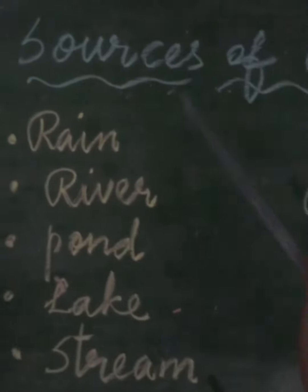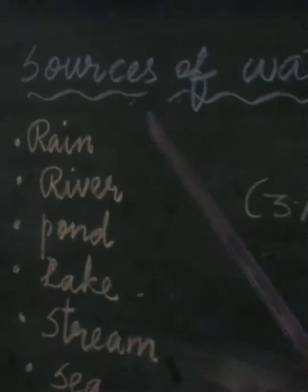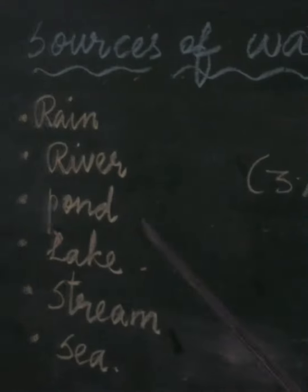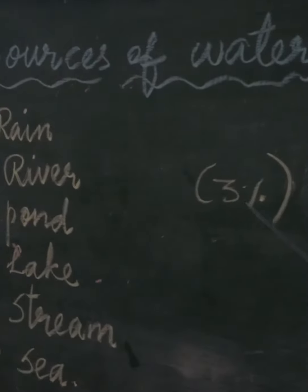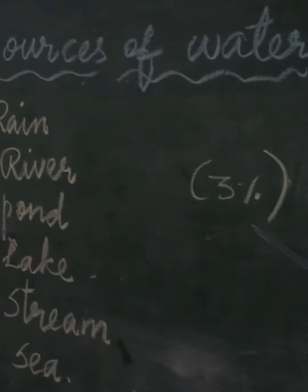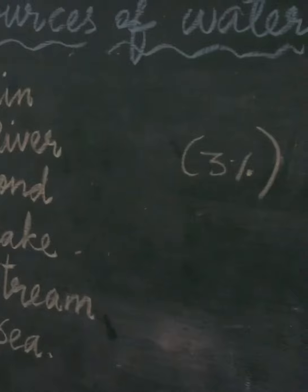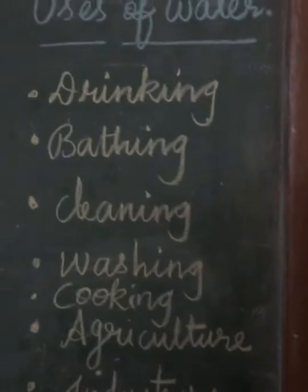71% of earth's surface is covered by water, but among that 71%, only 3% of water is fresh water, which is used for drinking purpose.